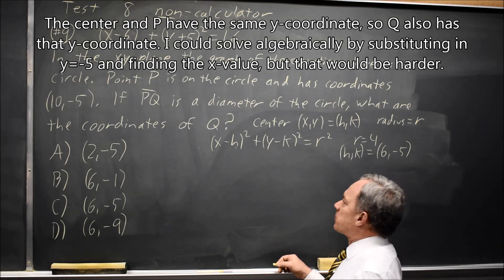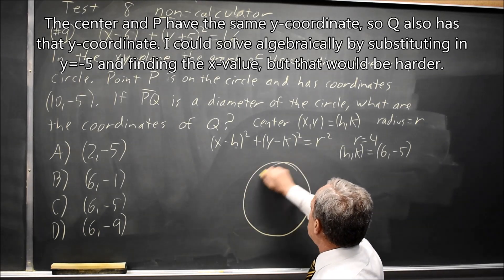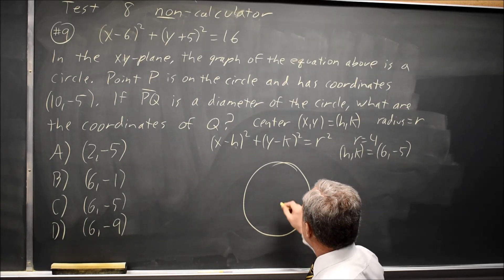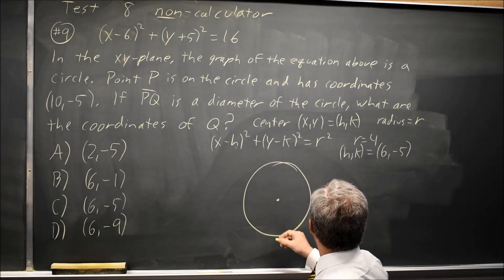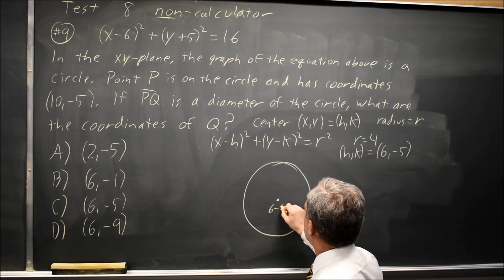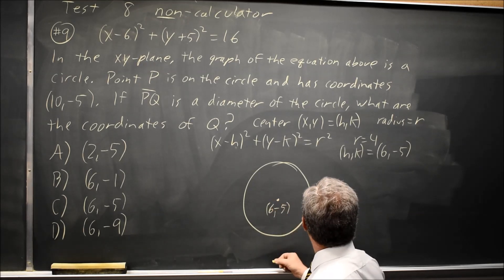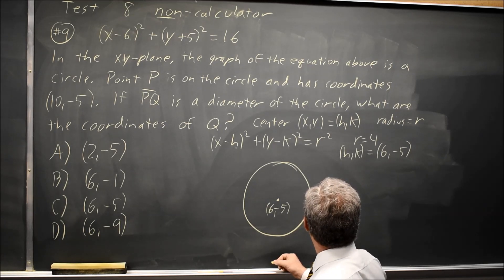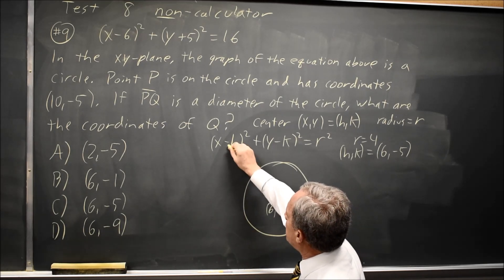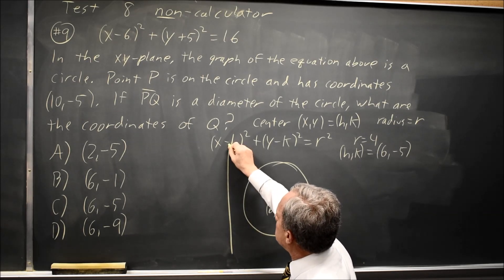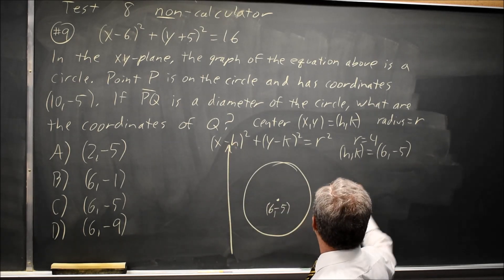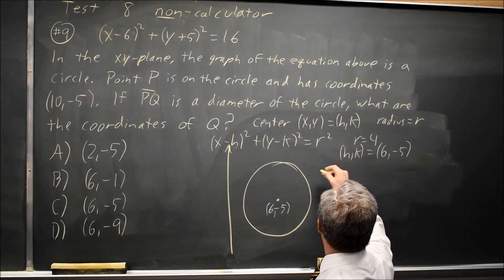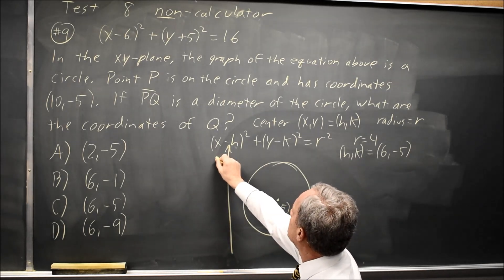To find the other end of diameter, I like to draw the picture. I'm better at drawing a circle if I draw the circle first and then put in my axis. My center is at (6, -5). And since the radius is 4, the Y axis is to the left of the circle, and the X axis will be above the circle.